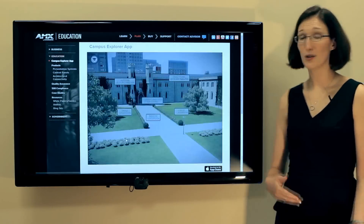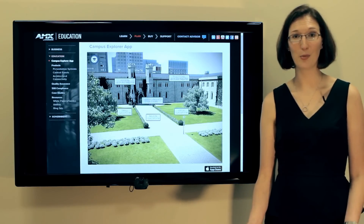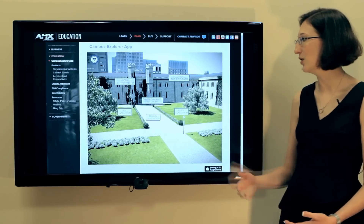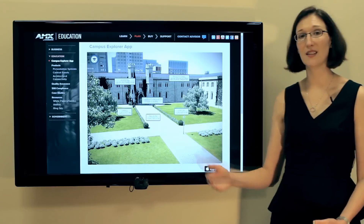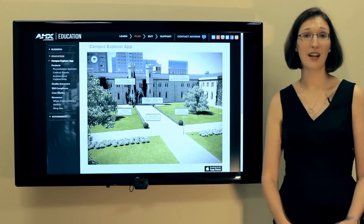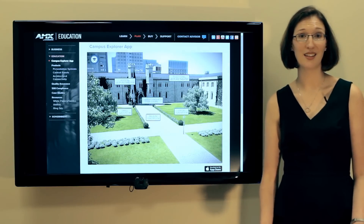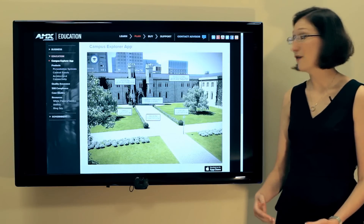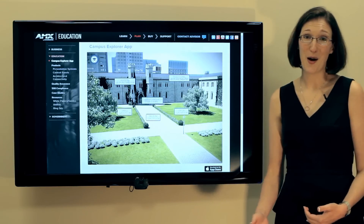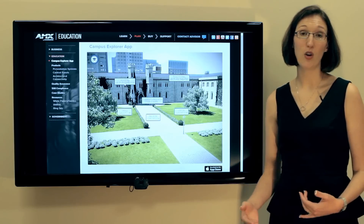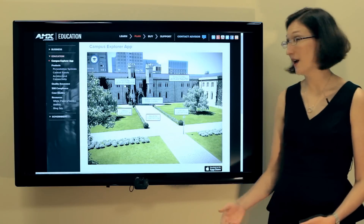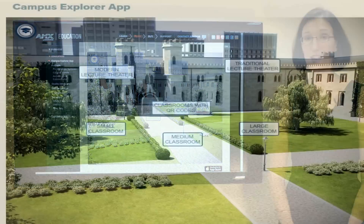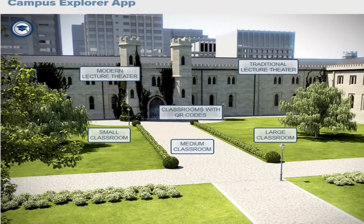So if you're designing a lecture hall, as an example, you might click on traditional learning and take a look at the different kinds of spaces that we've put together — some suggested configurations of technology. If you're developing a design for a large space, you might click on modern lecture theater or traditional lecture theater to take a look at our suggestions.